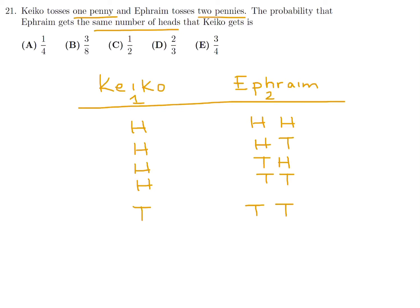Now Kiko tosses and he gets tails. Ephraim also gets tails and tails. Another combination would be tails, tail and head. Then tails, heads, tails. And finally tails, head, head.